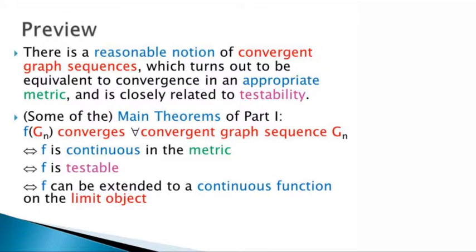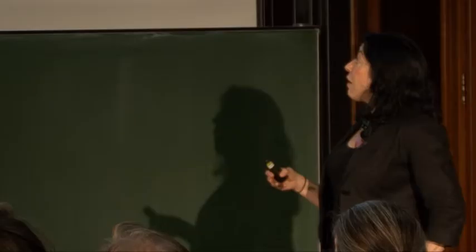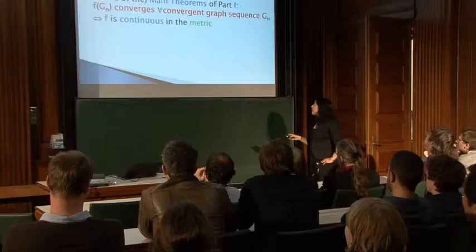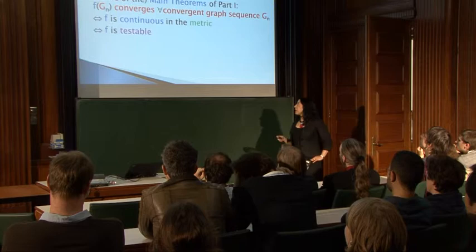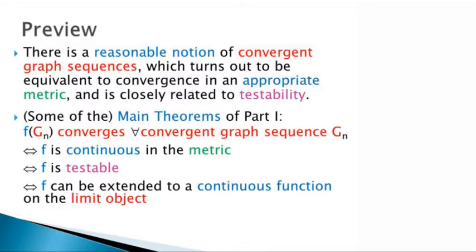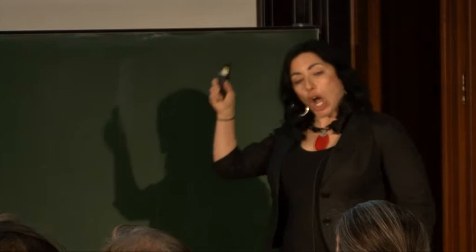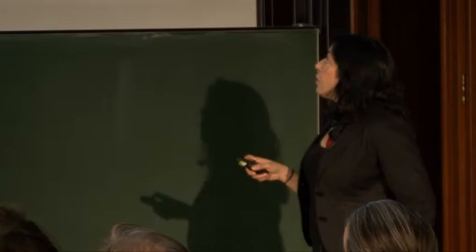There is a reasonable notion of convergent graph sequences, and it turns out to be the same as convergence in some metric. A lot of the talk will be coming up with that metric, which is closely related to sampling and to testing. Some of the main theorems are that a function will converge on a convergent graph sequence if and only if it has continuity in the metric we're going to come up with, if and only if it's a testable graph parameter, and if and only if it can be extended smoothly to a function on the limit object.